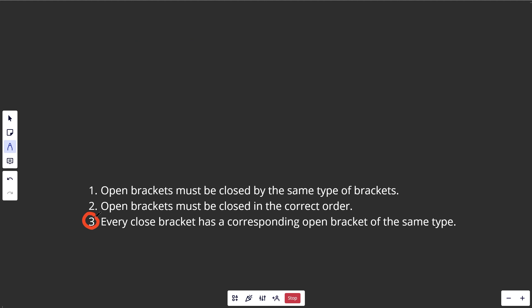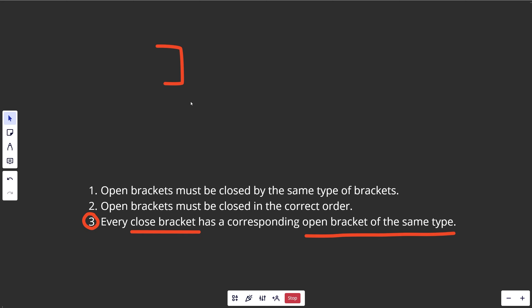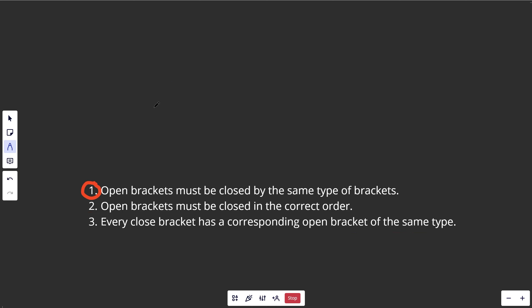For rule number three: every closed bracket has a corresponding open bracket of the same type. We could break this by having a round bracket, closing it — that's fine — but then closing again with no corresponding open bracket. There is no corresponding open bracket for that extra close, so we return false. Similarly, if you have a stray open bracket left over that was never closed at all, that also breaks rule one and returns false.